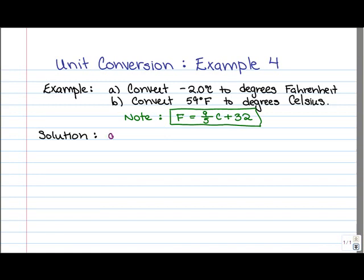So let's go ahead and have a look at the solution. So for Part A, we want to find the temperature in degrees Fahrenheit when the temperature in degrees Celsius is negative 2.0 degrees. So what we're going to do is write out our formula and replace C with negative 2.0.